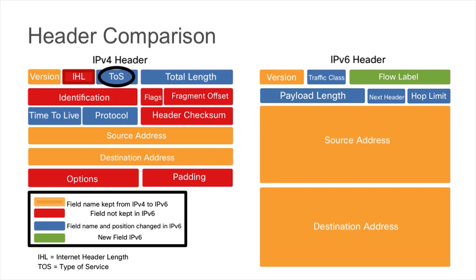The next field in IP version 4 is the type of service field. In IPv6, this has been renamed and repositioned — it's now called the traffic class field. It's very similar in function, allowing us to mark things with DSCP values, differentiated service code points, or IP precedence, so we can still use it for quality of service.